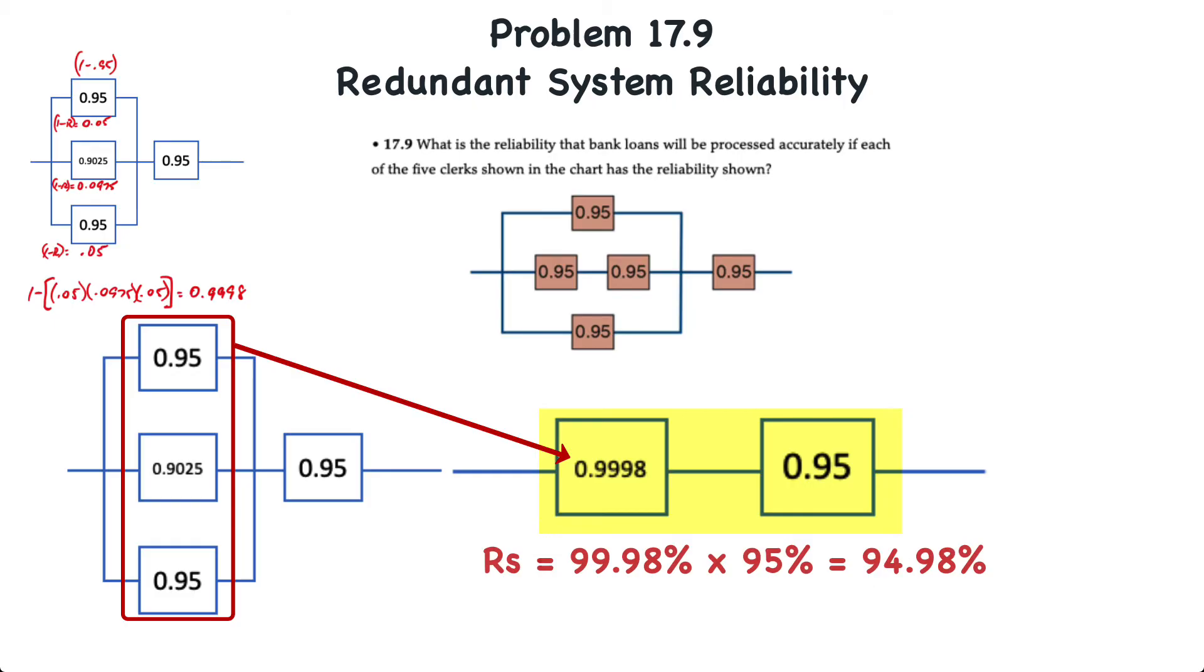So, 99.98% times 95% is an overall reliability of 94.98%. And that was established in three steps.